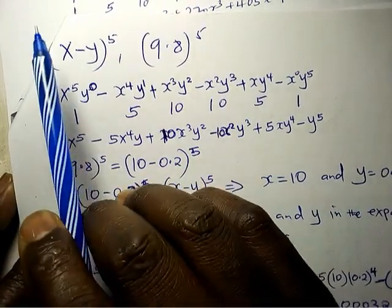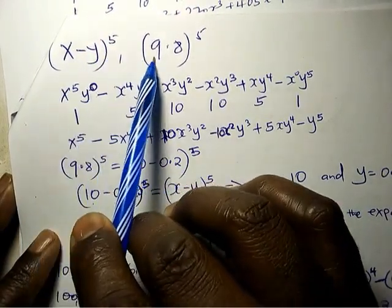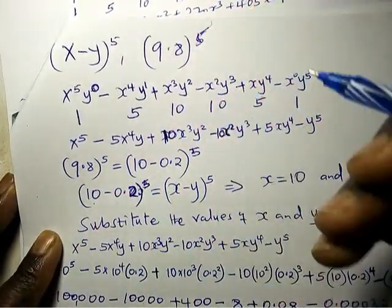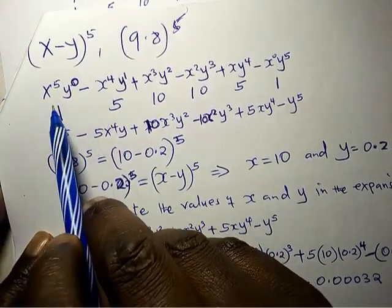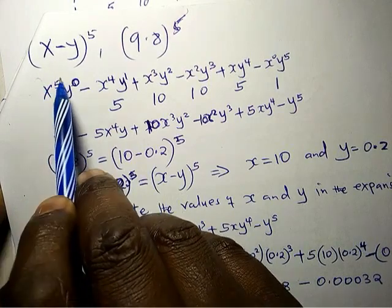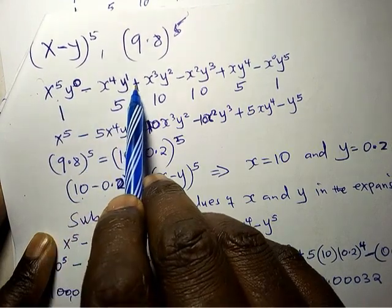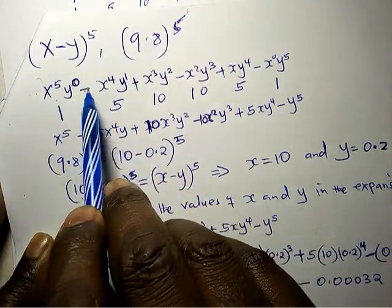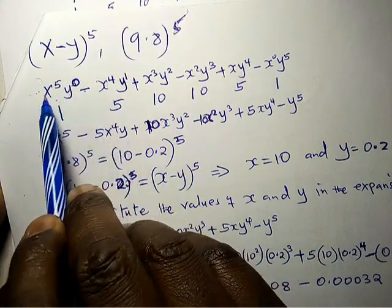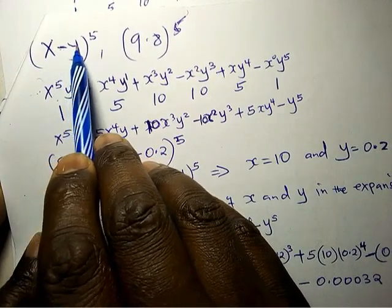So if you are given: expand this, then use this expansion to solve 9.8^5. You will expand like I have expanded here. But when there is a negative here, the first term is positive, the second term is negative, the third positive, and so on.